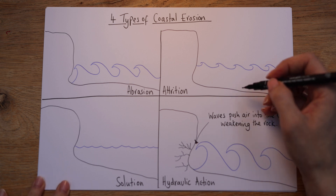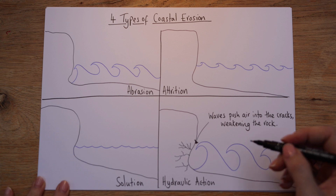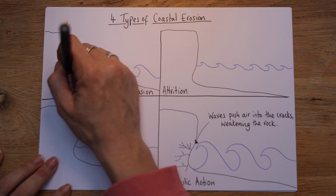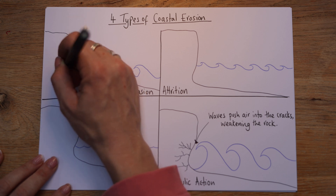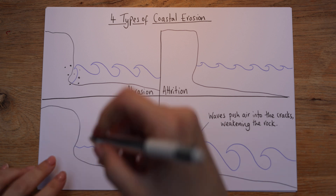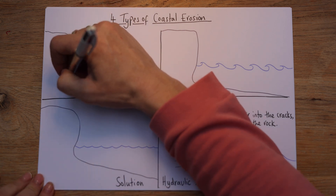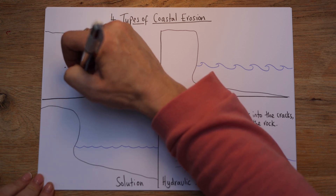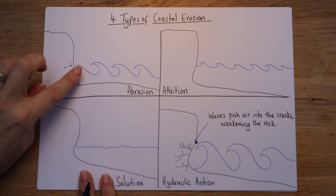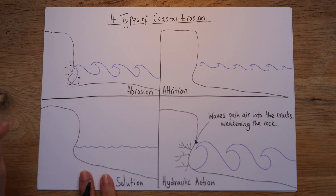Moving to abrasion — the next biggest one. The water isn't just water; it has sediment, stone, shingles, shells, all kinds of stuff in it. As the waves head to shore and crash onto the cliff, they contain this sediment. It's a bit like sandpaper — that's what I say to my students. It's like the wave is using sandpaper to wear away at the cliff face.